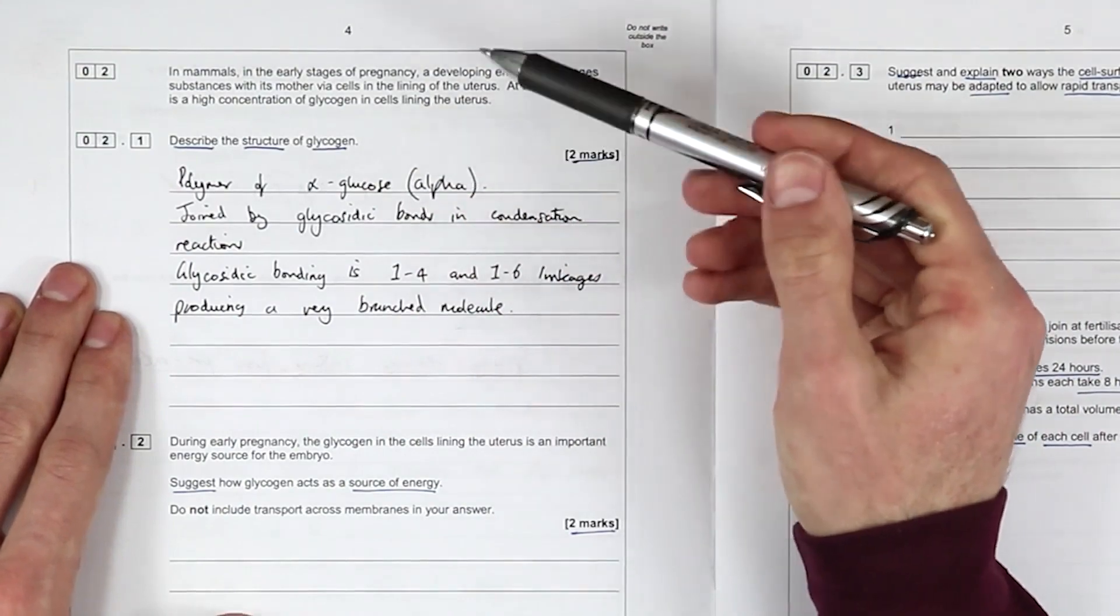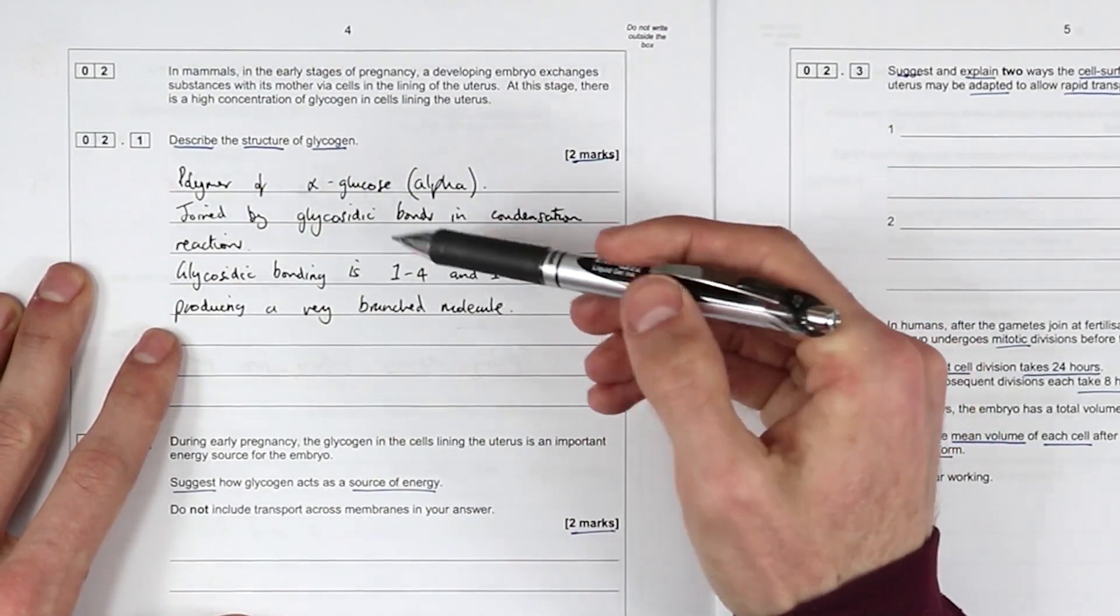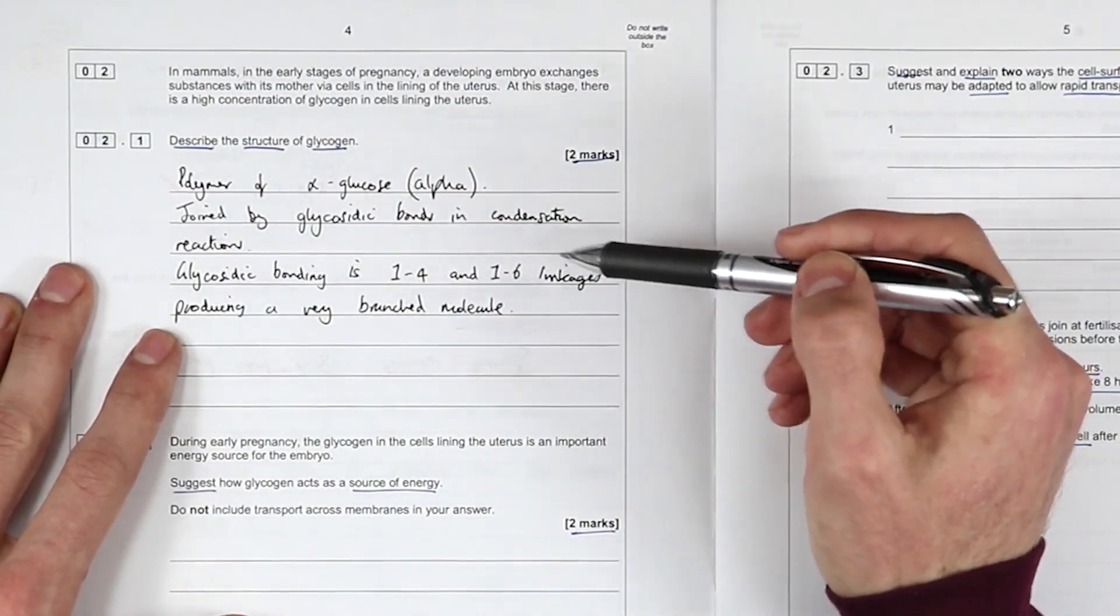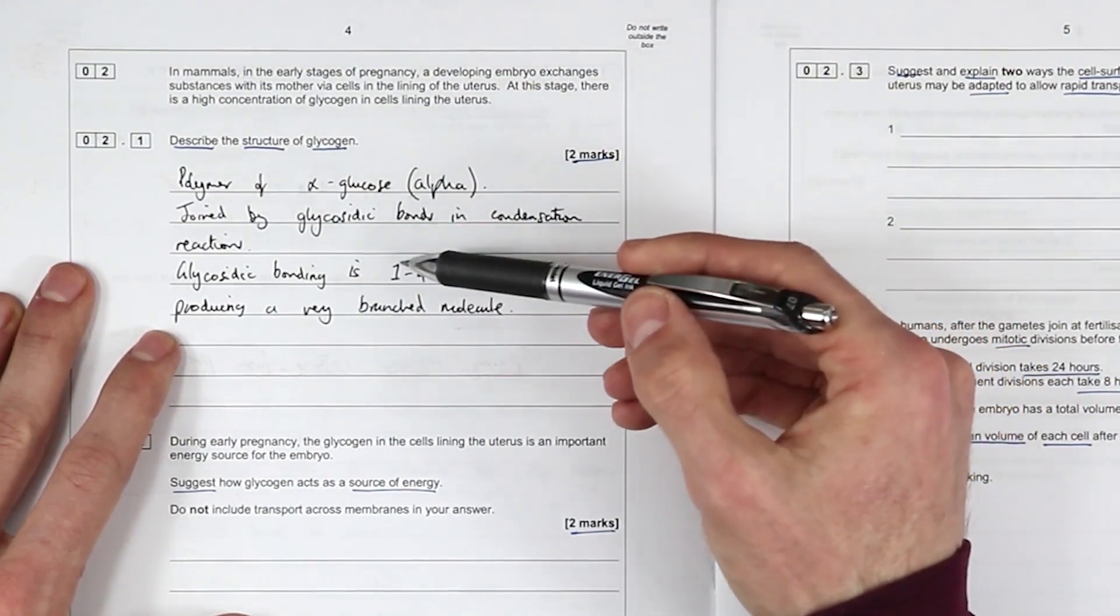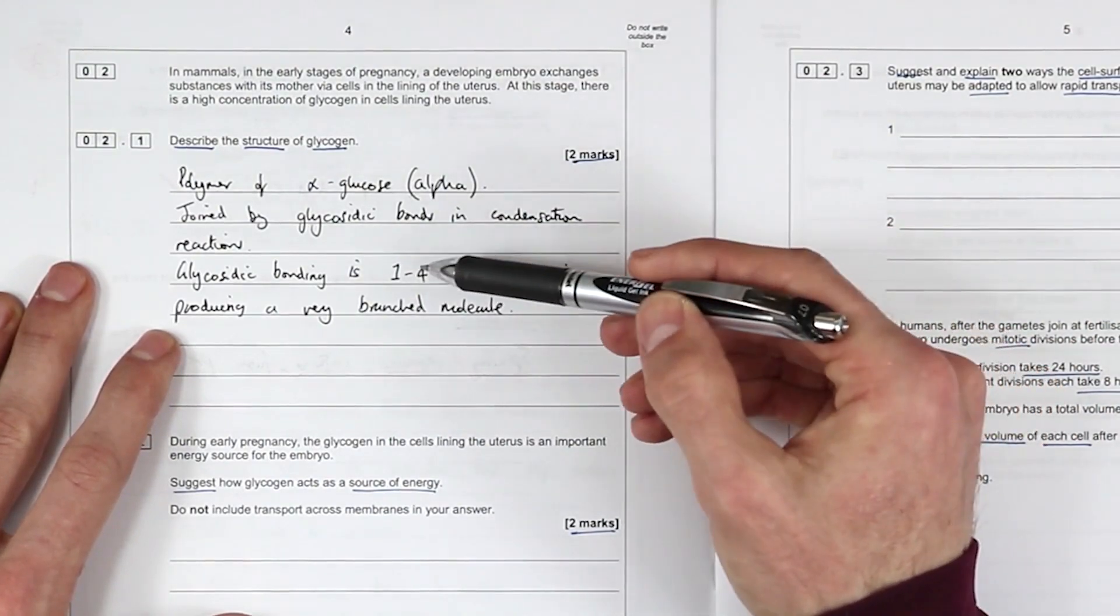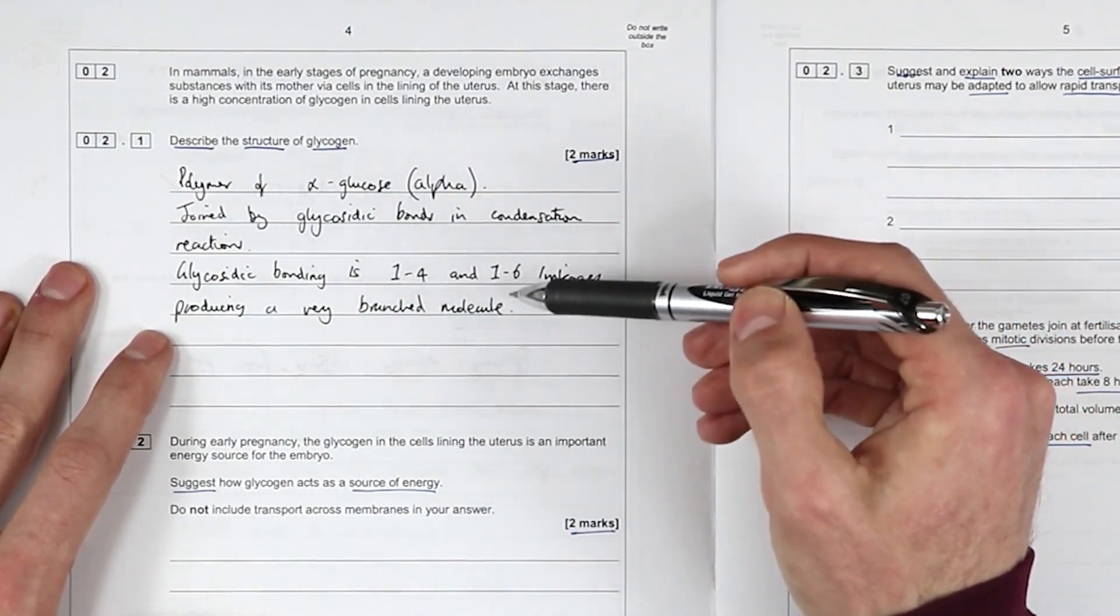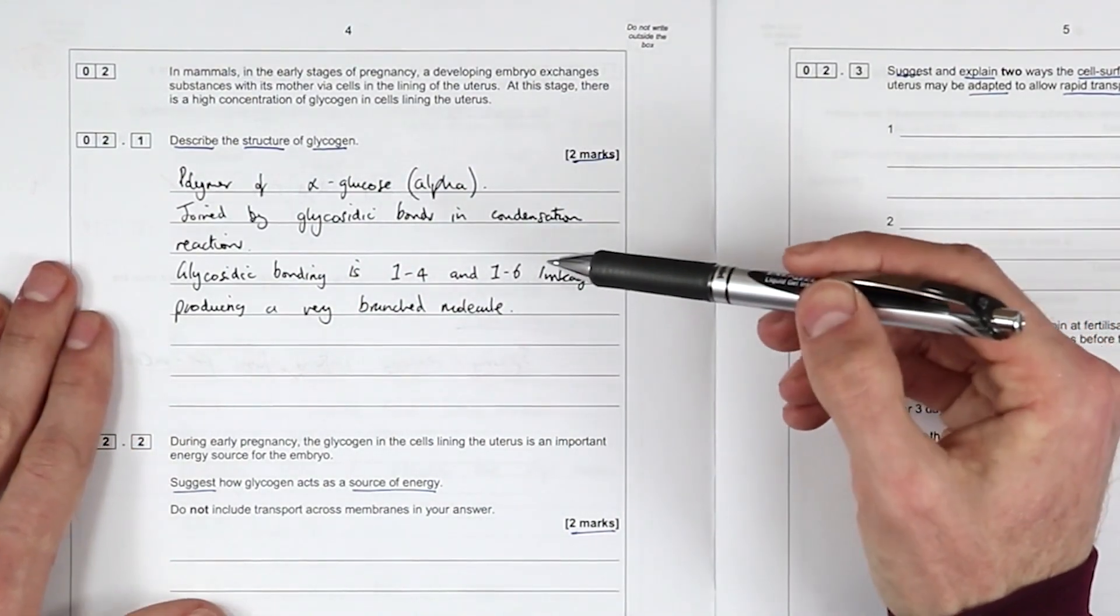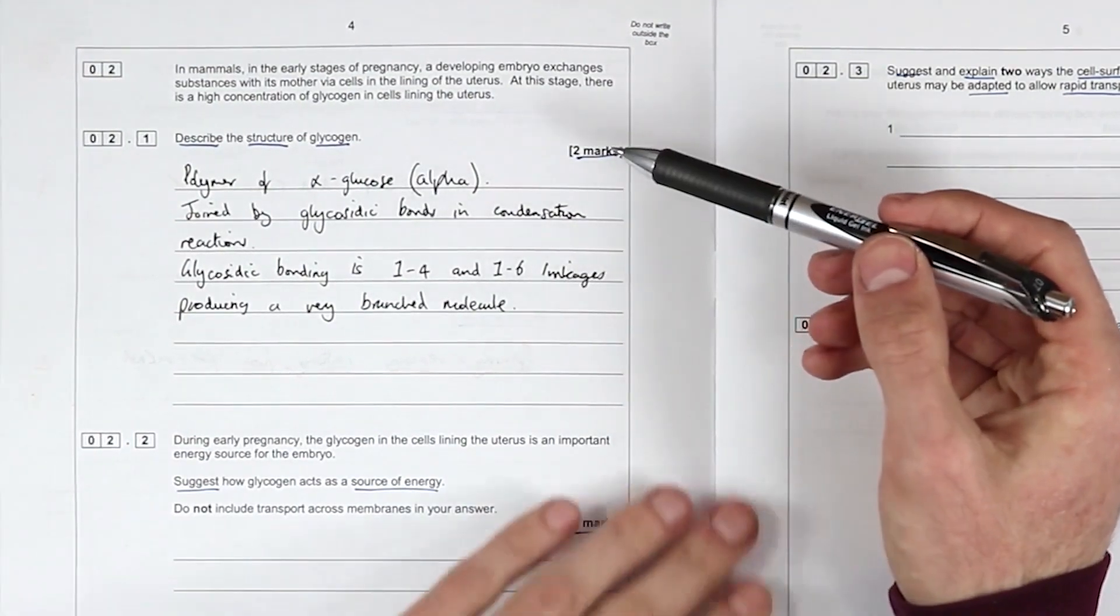Polymer of alpha glucose joined by glycosidic bonds in condensation reactions. Glycosidic bonding is 1,4 and 1,6 linkages producing a very branched molecule. So it's branched. The type of bonding is between the first carbon and the fourth carbon to produce the straight chain and the first carbon and the sixth carbon to form the branch. Check out the videos if you don't know what that means.